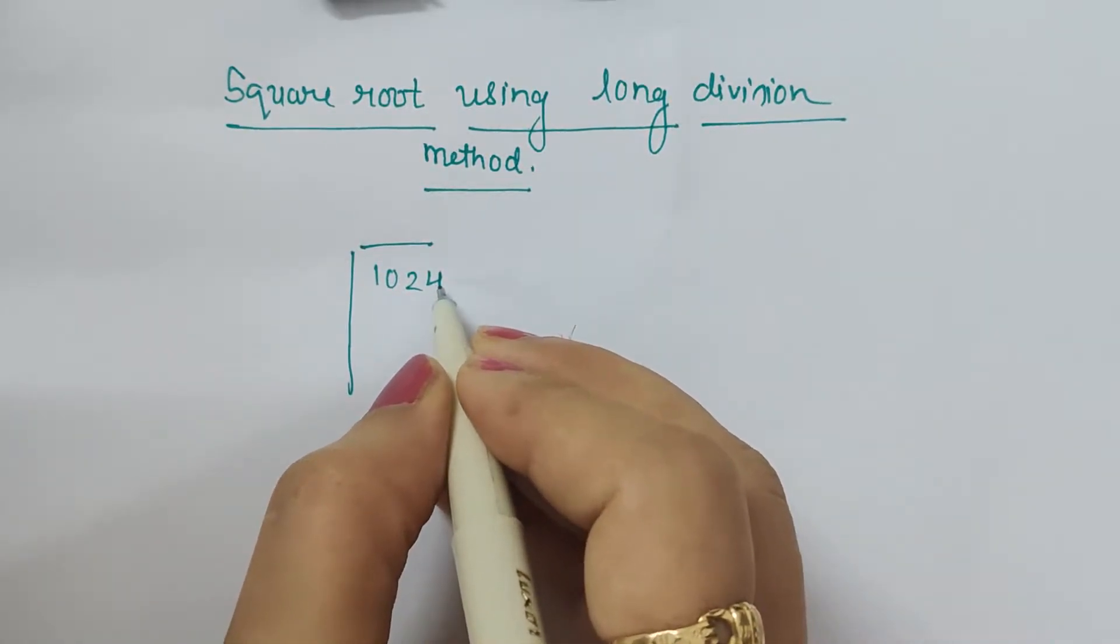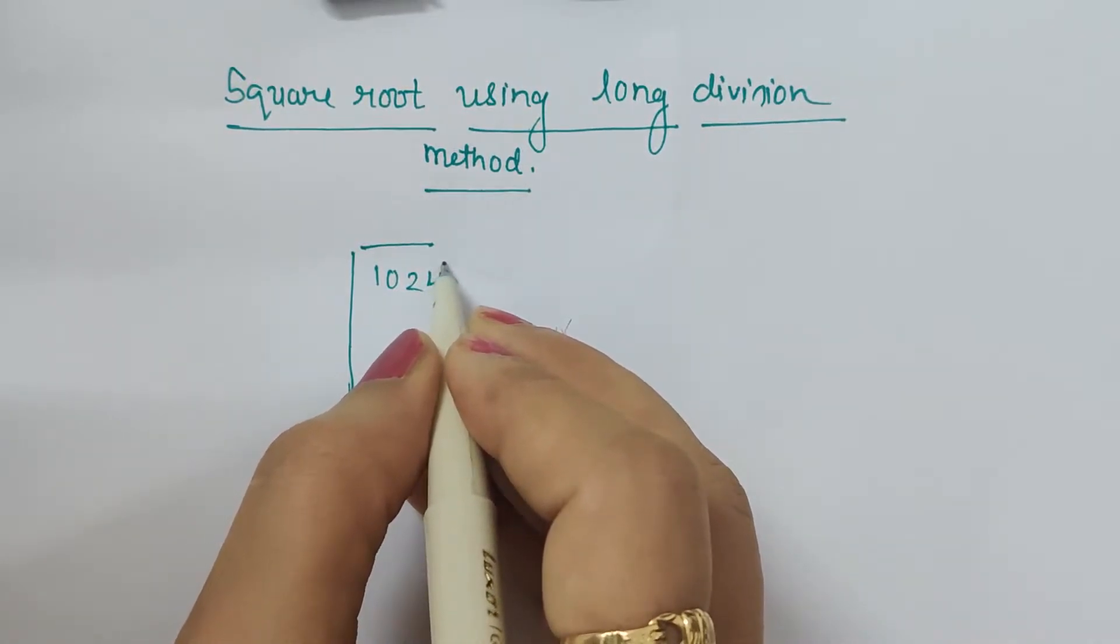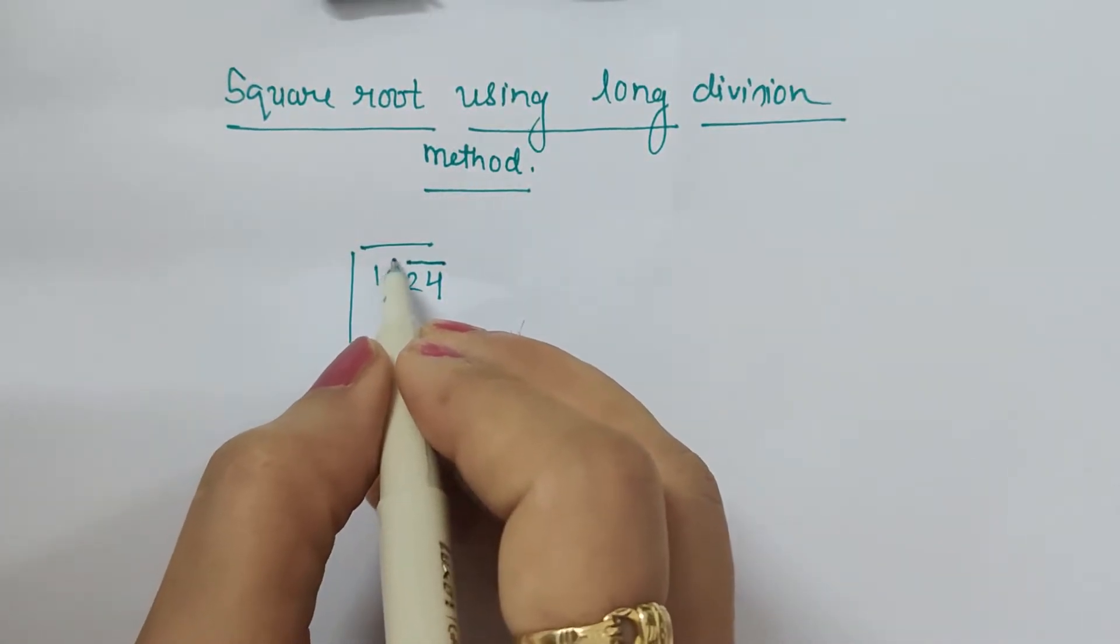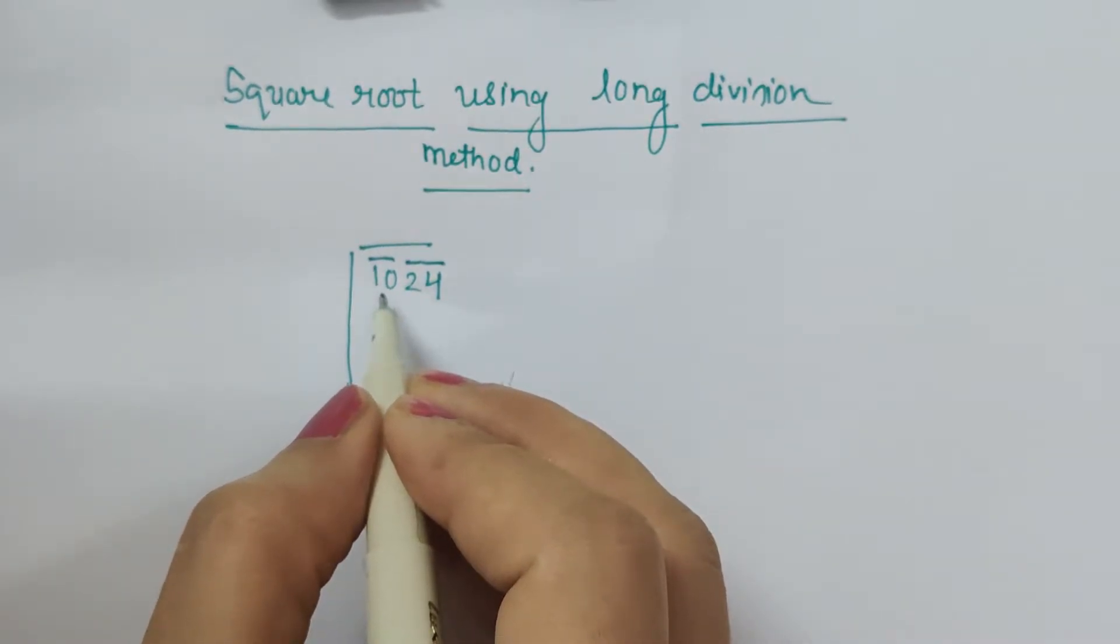We have to see the unit digit and from the unit digit we have to start making pairs. Then we have to check the perfect square equal to or just less than this value 10.